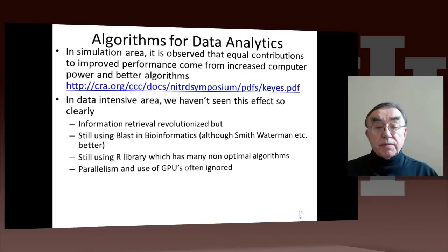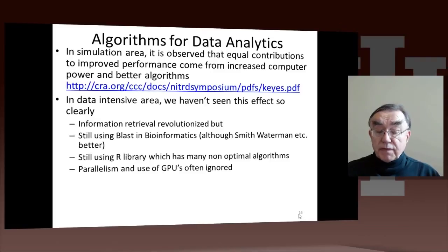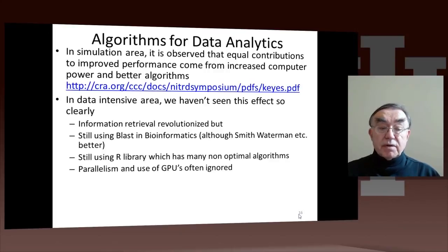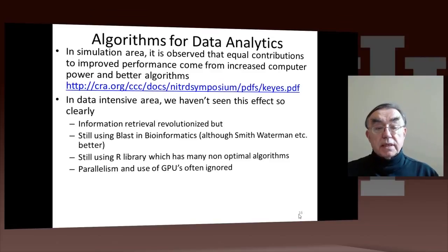In the data-intensive area, we don't quite see the same degree of improved algorithms. Some algorithms, like information retrieval, have been revolutionized by new approaches. But often, as in bioinformatics, we're using BLAST — a very important and brilliant algorithm — which is not really being improved. We're also using libraries like R, which do not necessarily have the most optimal algorithms. The issues of using graphics processing units and parallel computing, which are well understood in simulation, are not so clearly understood in the data science area.